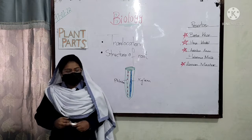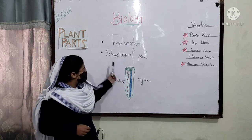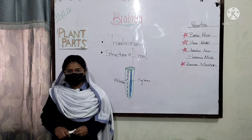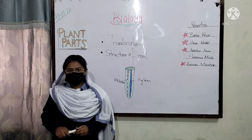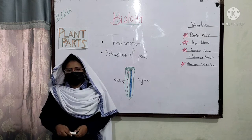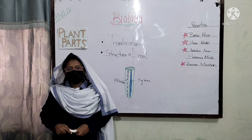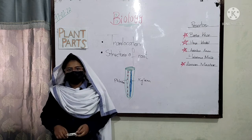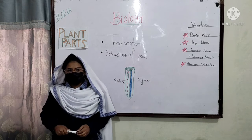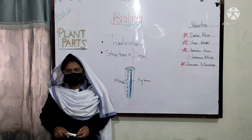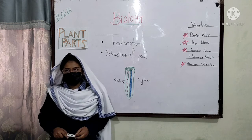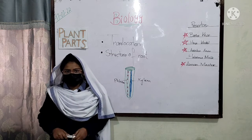My next topic is the structure of roots. From the moment a seed grows, its root starts absorbing water and minerals from the soil. Roots have branches that play an important role in the absorption of water and minerals from the soil.